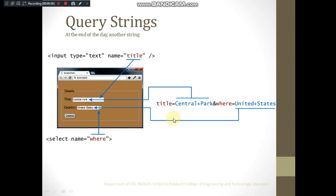We will look into how data is sent using a query string. For example, for a text box with the name 'title', if I enter 'central park', and another text box with the name 'where', and entering 'united states' — the data is sent to the server in the form: name of the element equals whatever we have typed, so title=central park.